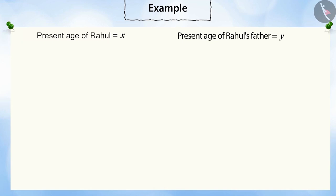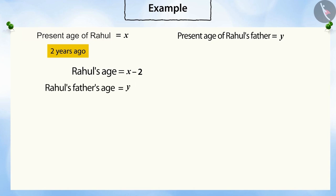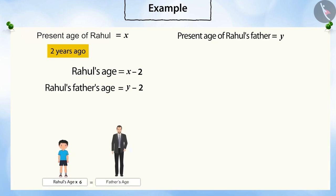If Rahul's present age is X, then what was Rahul's age two years ago? Two years ago, both of them would have been two years younger. That is, two years ago, Rahul's age was X minus 2 and his father's age was Y minus 2. Since father's age was six times that of Rahul's age, if Rahul's age is multiplied by six, both will be equal — six multiplied by (X minus 2) is equal to (Y minus 2).